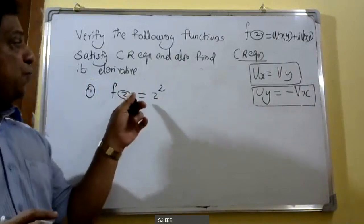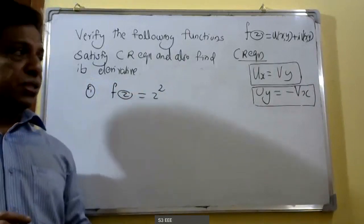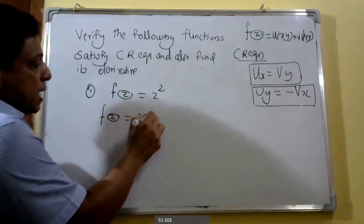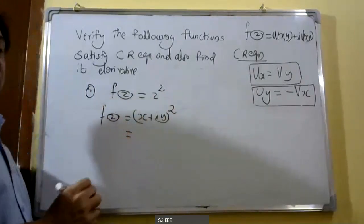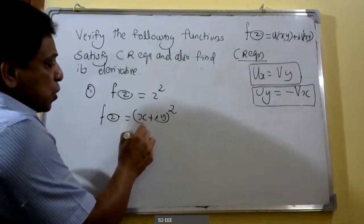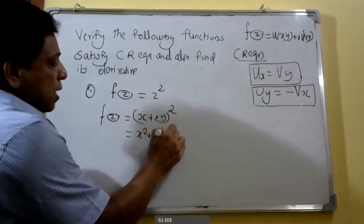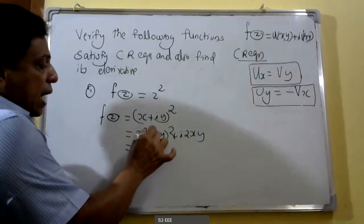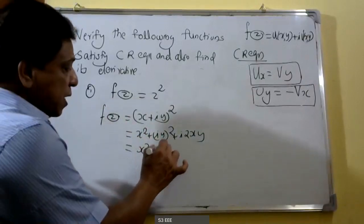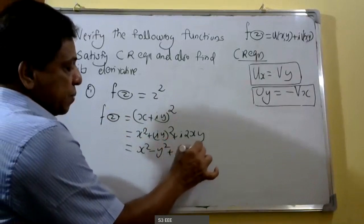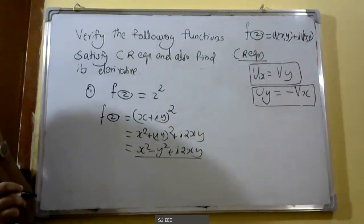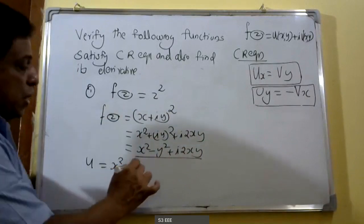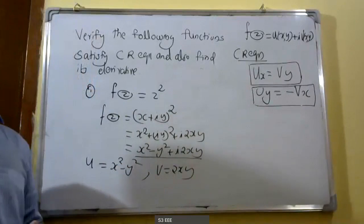We have to check that this function satisfies the Cauchy-Riemann equations. For that, f of z is equal to z, taken as x plus i y, so we have x plus i y the whole square. When squaring: x square plus i y the whole square plus i into 2xy, that gives x square plus i square y square plus i into 2xy. Since i square equals minus 1, we get x square minus y square plus i into 2xy. Equating real and imaginary parts: u equals x square minus y square, and v equals 2xy.